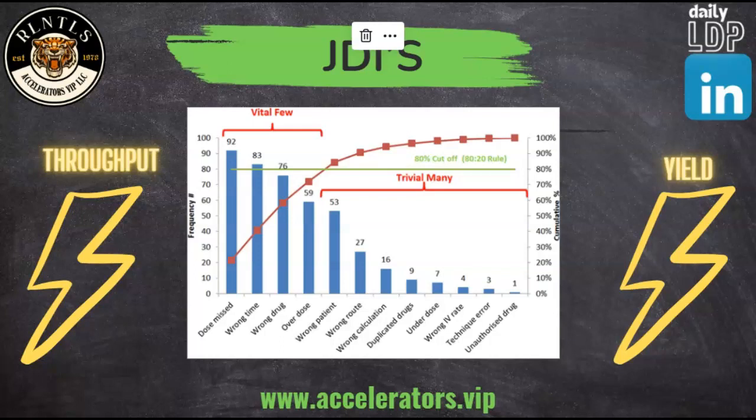This Pareto example is in the medical field, but it can be used in any form of manufacturing or production, all the way down to ice cream cones and waste. The Pareto shows the top 20% vital few. Looking left to right: dose missed, wrong time, wrong drug, overdose — the vital few that have the most impact over a day, a week, or a year. We want to attack those, not the trivial many. We solve for the high-risk, high-impact issues on the left side — the top 20% that cause 80% of the issues.